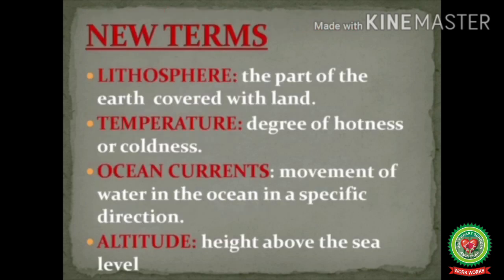Let's discuss the new terms for this topic. Lithosphere — the part of the earth covered with land. Temperature — degree of hotness or coldness. Ocean currents — movement of water in an ocean in a specific direction. Altitude — height above the sea level.